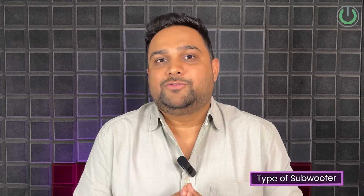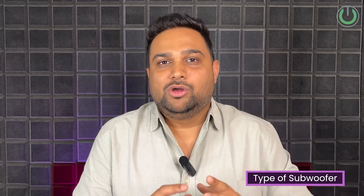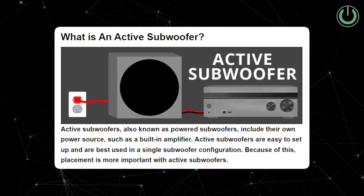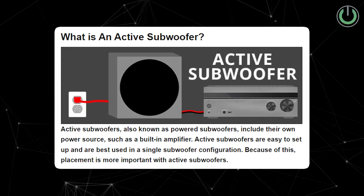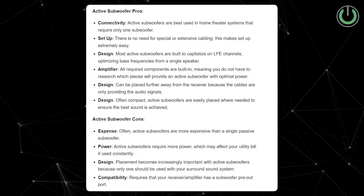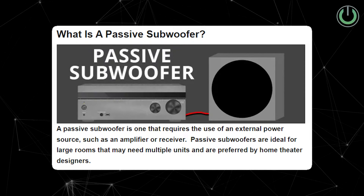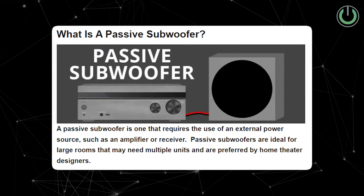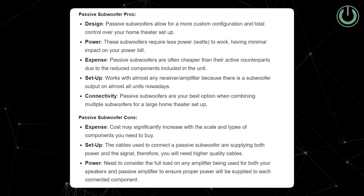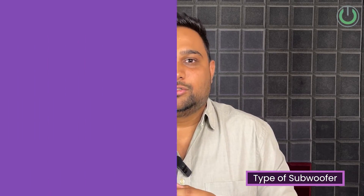The next step is to understand and select the type of subwoofer. There are two main types: active and passive. Active subwoofers are cheaper, easier, and more reliable — all you have to do is connect them to a power socket and give them a signal from the AV receiver. These subwoofers range from as low as 100 watts up to 1000 watts. Passive subwoofers require a separate power amplifier and are preferred in extremely large cinema rooms where you want to control the frequencies properly, but they do come at a cost.